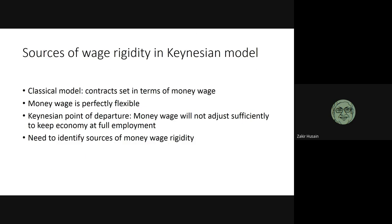In the classical model, the contracts were set in terms of money wage. When workers go to the labor market, they bargain with the producers and set a money wage. This money wage is perfectly flexible. The advantage in the classical model is that the workers also have perfect market information, so they know what the price level is. If they set W and they know what price is, then they are basically bargaining in terms of real wage.